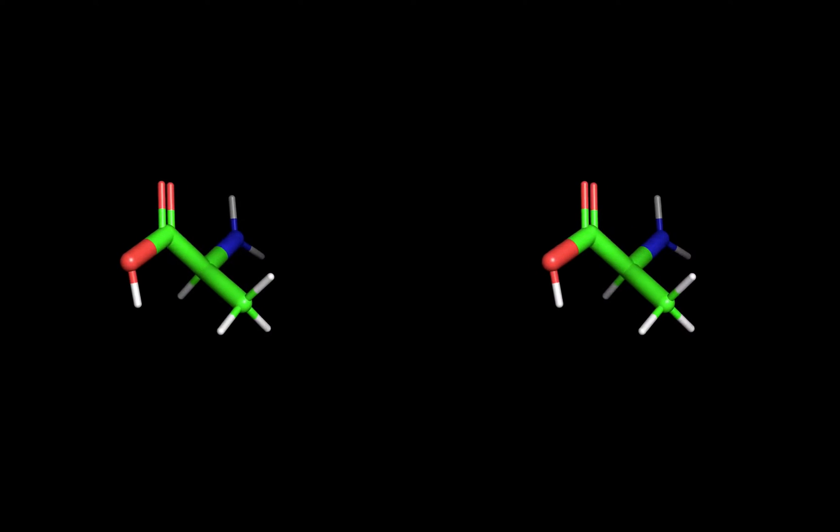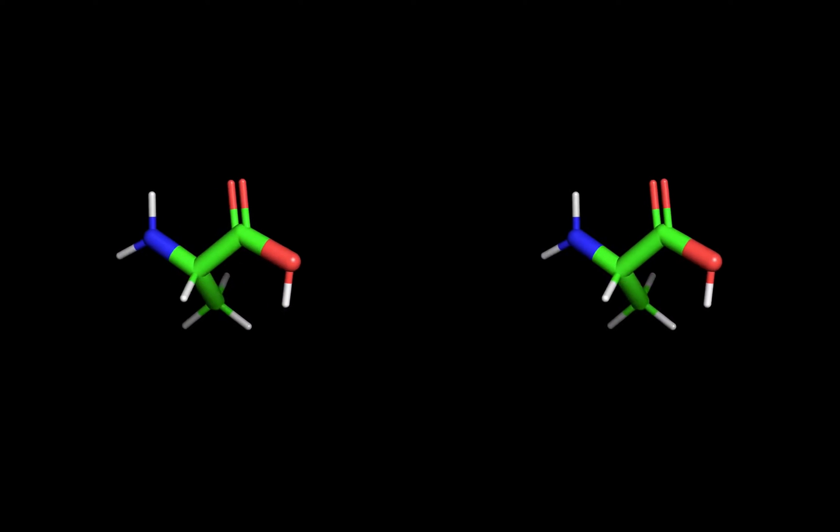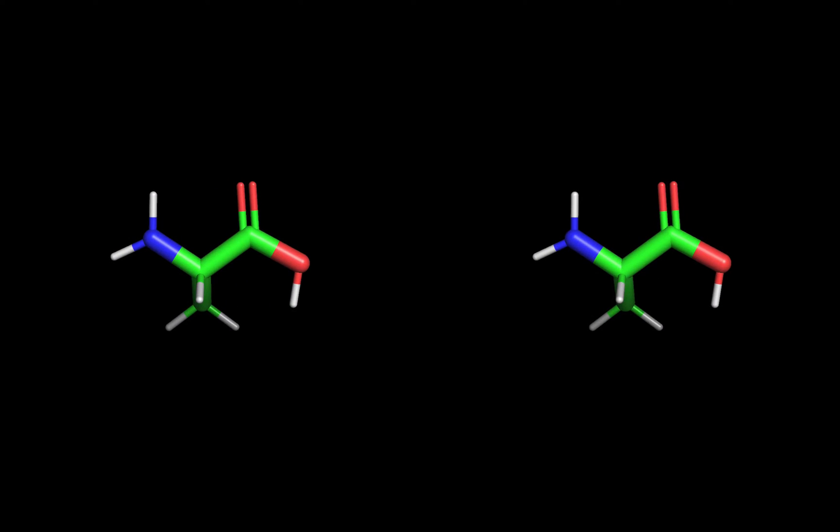Notice the color coding. This is called CPK coloring and it tells us which atoms we're looking at. Nitrogen is always blue and oxygen is red. Take a good look at the red atoms. The program that I'm using shows a double line to show the double bond to the carbonyl of the amino acid carboxyl group.